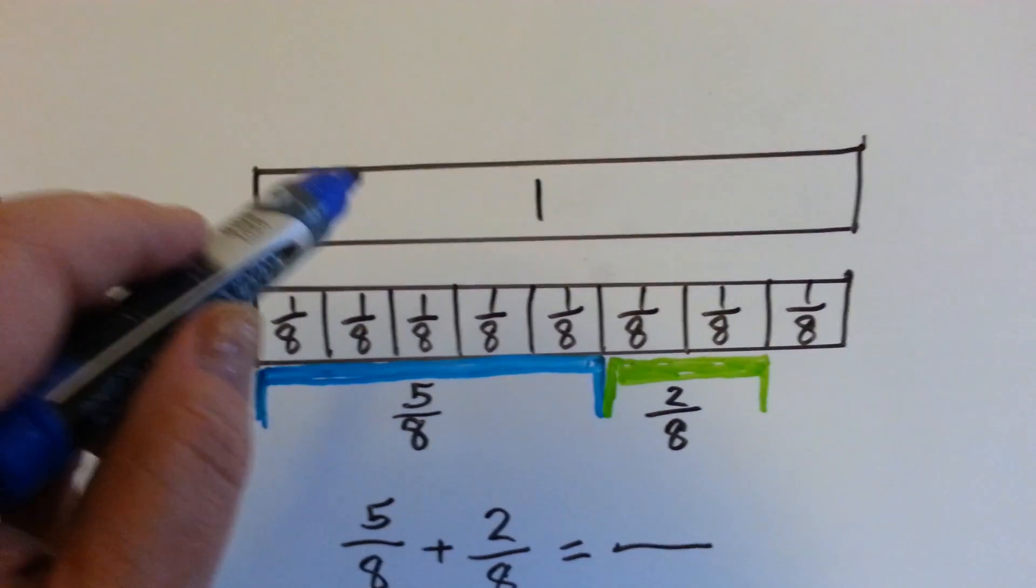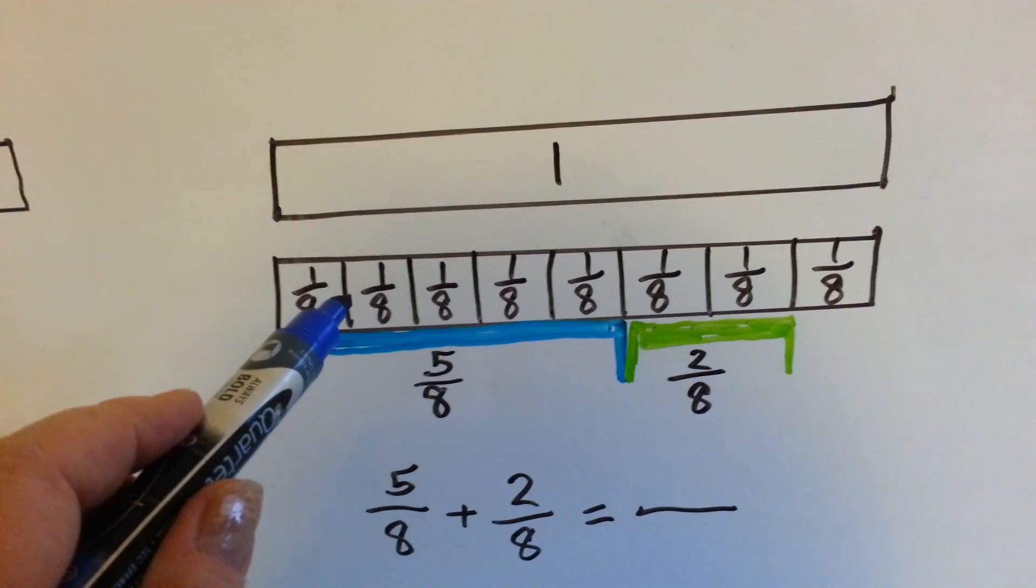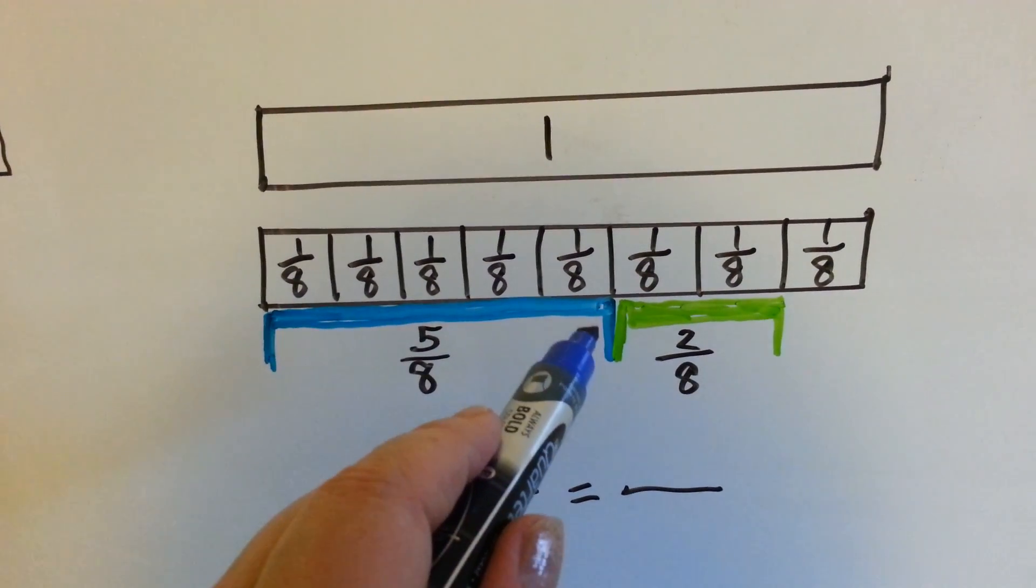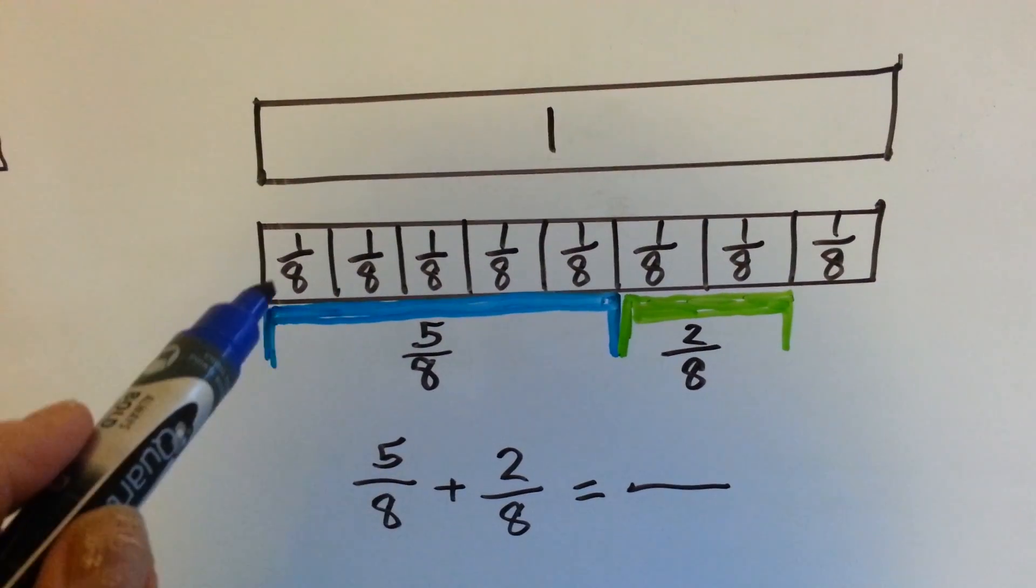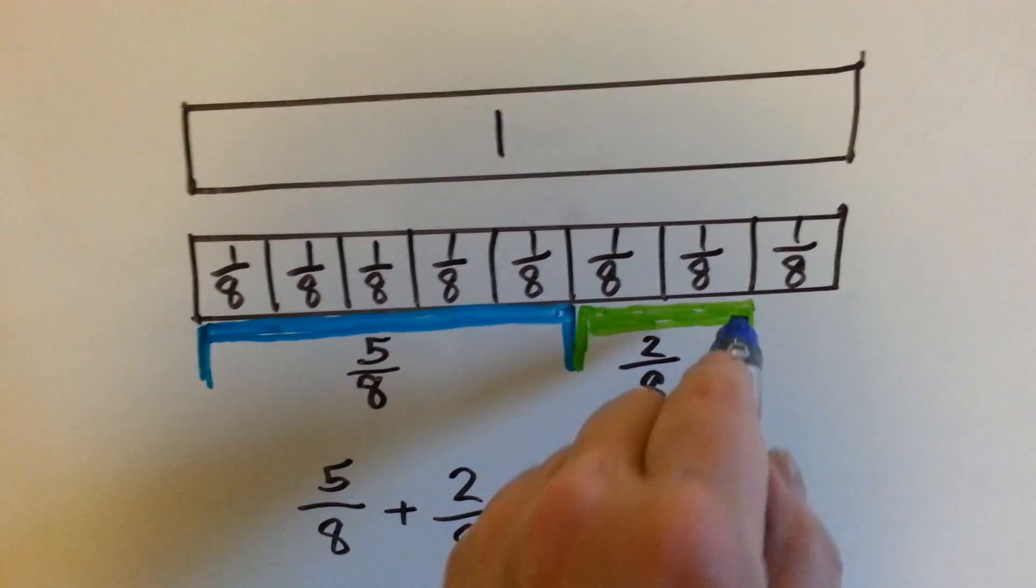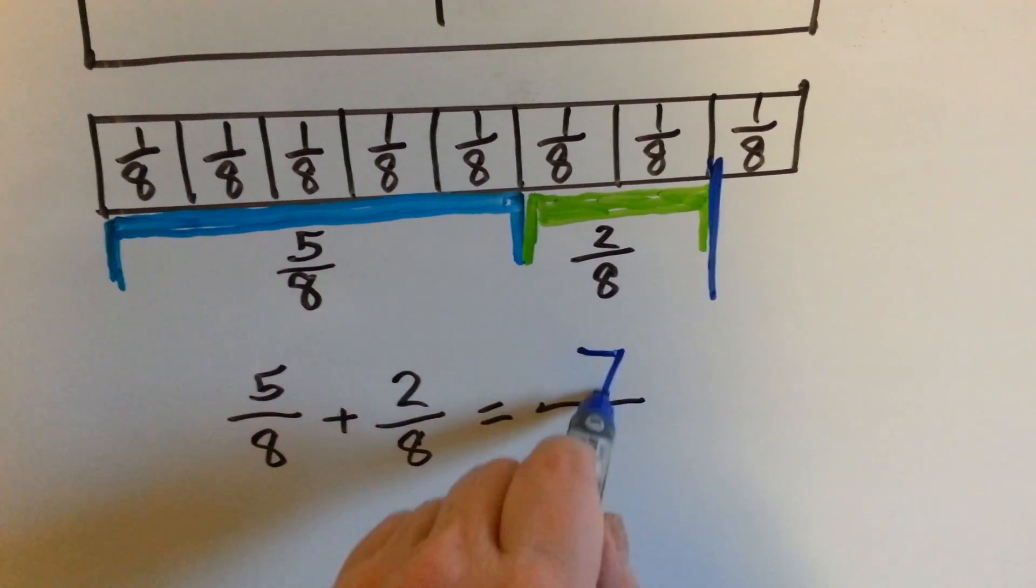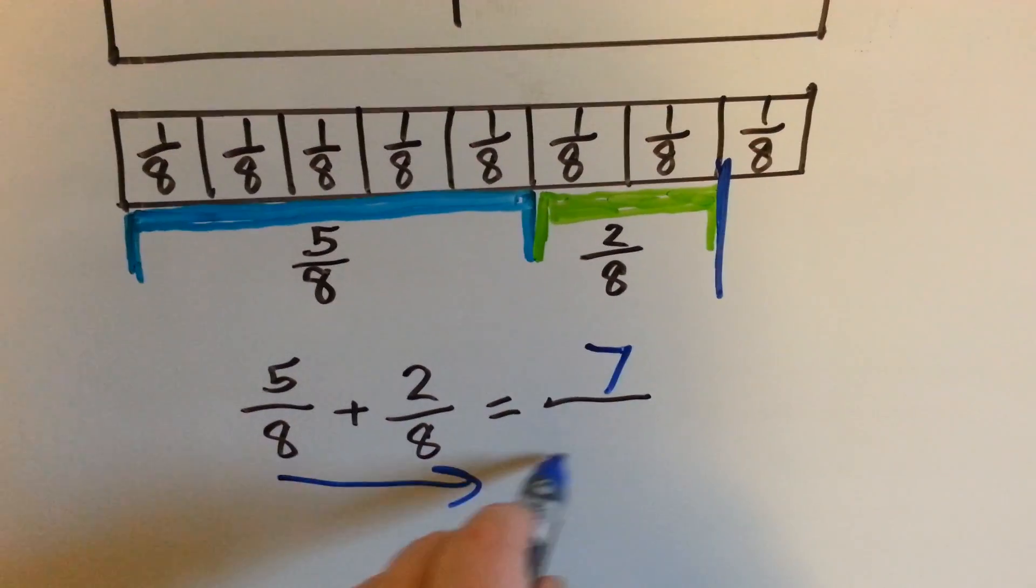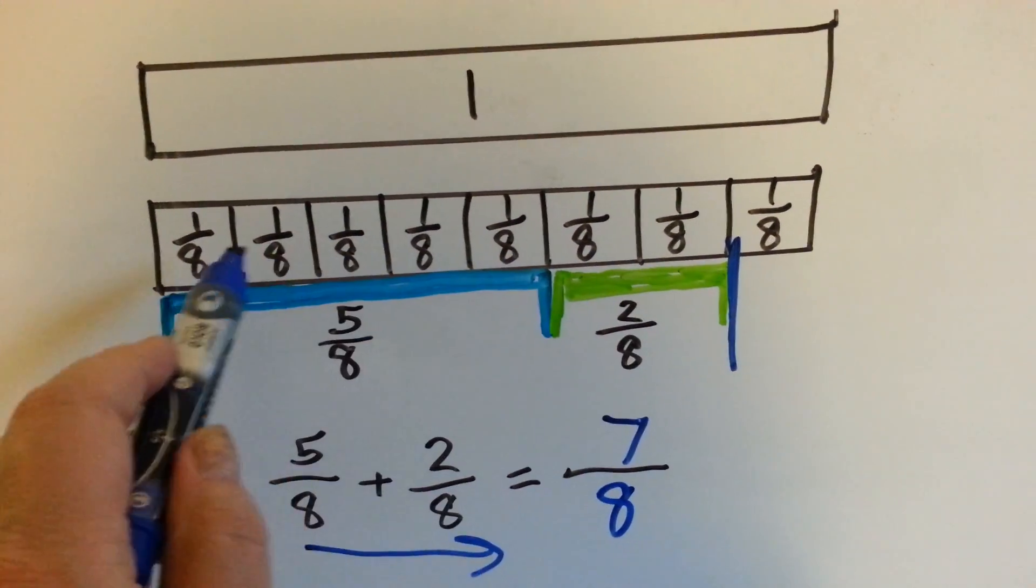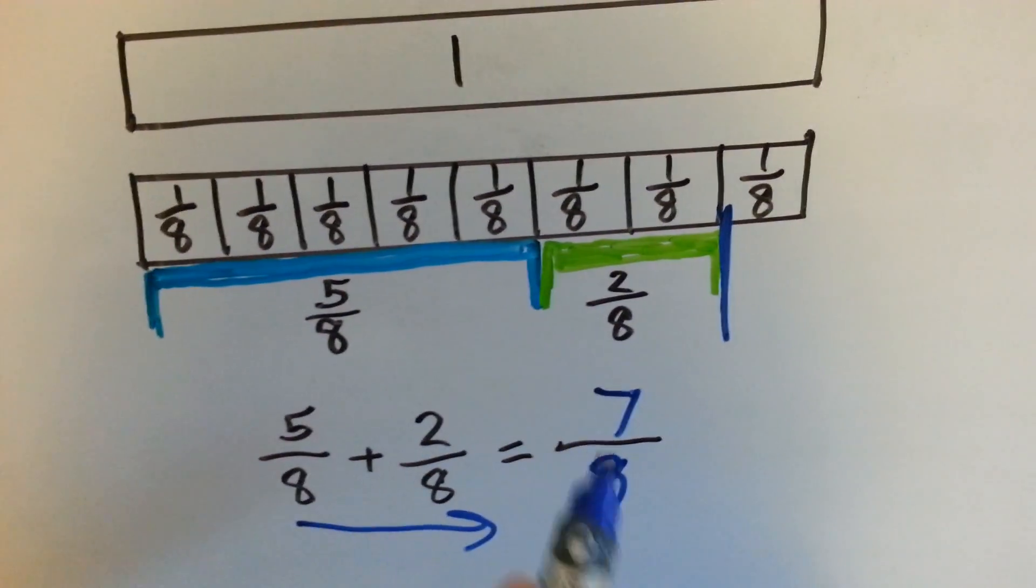Look at this one. This is one whole one before it's cut, and this is what it looks like when it's cut into 8 pieces, just like her loaf of bread. 5 plus 2 is 1, 2, 3, 4, 5, 6, 7. Because it stops here. 5 plus 2 is 7. We slide the denominator over 8 because they're all eighths. We're adding up 7 one eighth slices, so it's 7 eighths.